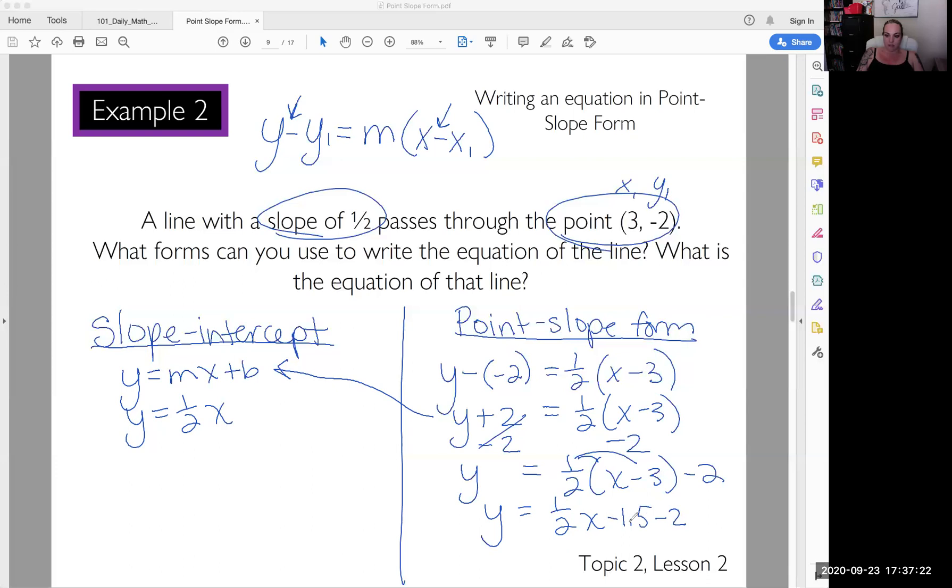So this is going to be minus 3 and a half. So our final in slope intercept form is 1 half x minus 3.5. Now we've gotten these to look the same. So we can see that our y-intercept is negative 3 and a half. And so now we can write that also in slope intercept form.